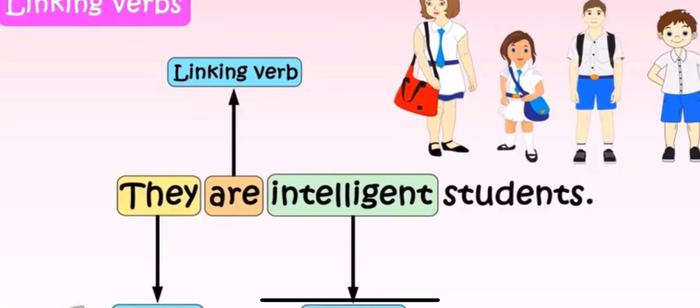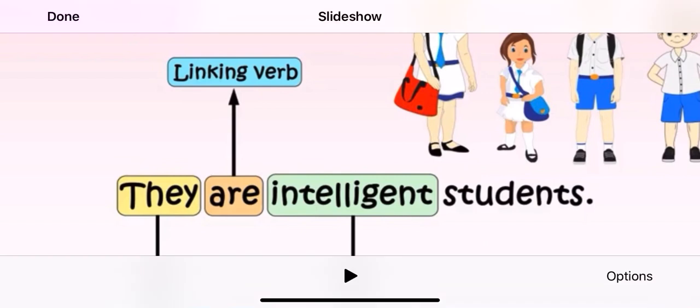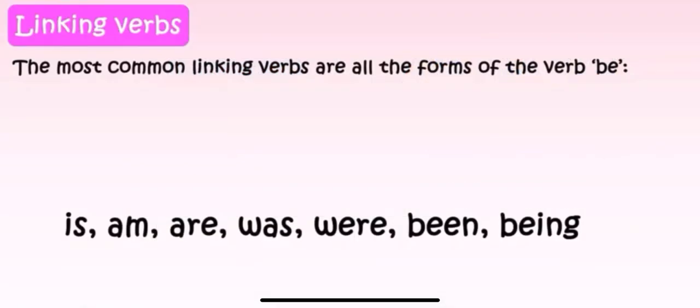Next, they are intelligent students. So, are is the linking verb and intelligent is adjective. Linking verb is joining the subject. They is subject and intelligent is adjective. So, it is linking the subject to the adjective.